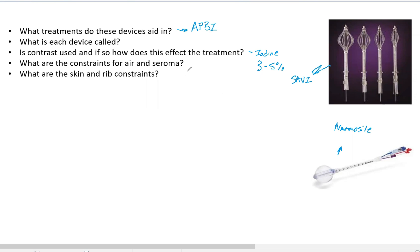What are the constraints for air and seroma? Both of these need to make up less than 10 percent of the PTV volume. That is important to know. If that isn't the case you can't use APBI, and that's something a physician and the physicist need to look and decide once they get the CT.